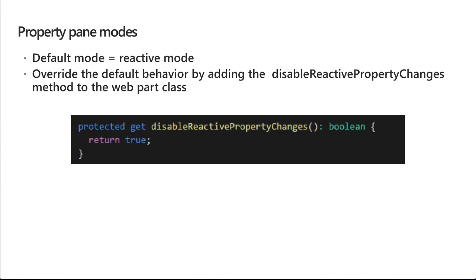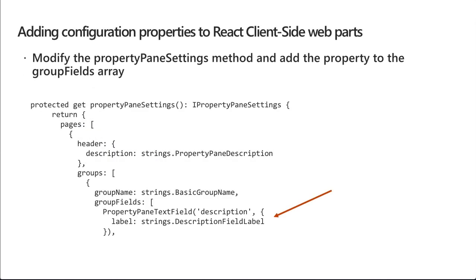The way you change the mode is by overriding the disableReactivePropertyChanges property. By default this returns false, but you can switch it to return true instead, which makes the property pane non-reactive. To add configuration properties to web parts, you modify the property pane settings method and add the property to the group fields array. Here you can see a property pane text field mapped to the description public property with a descriptive label showing in the UI.